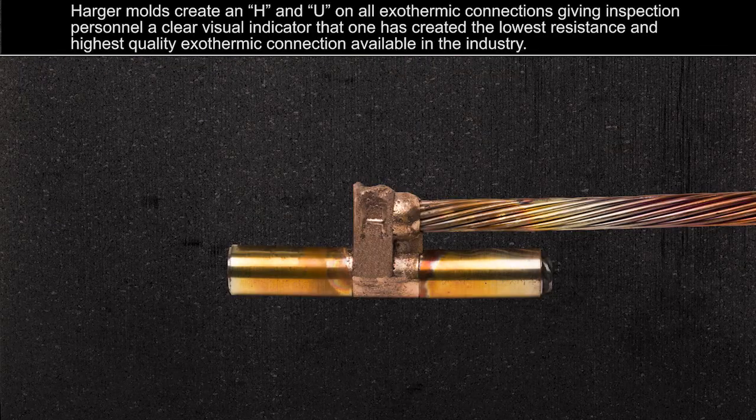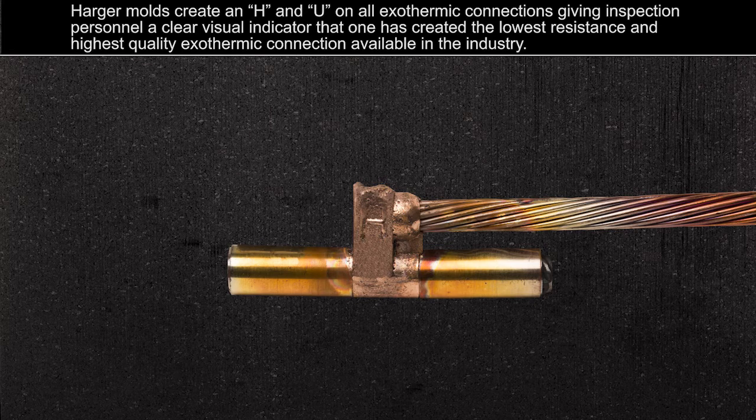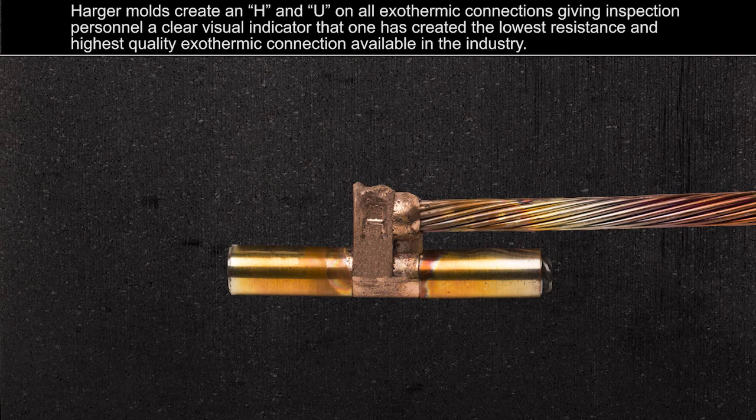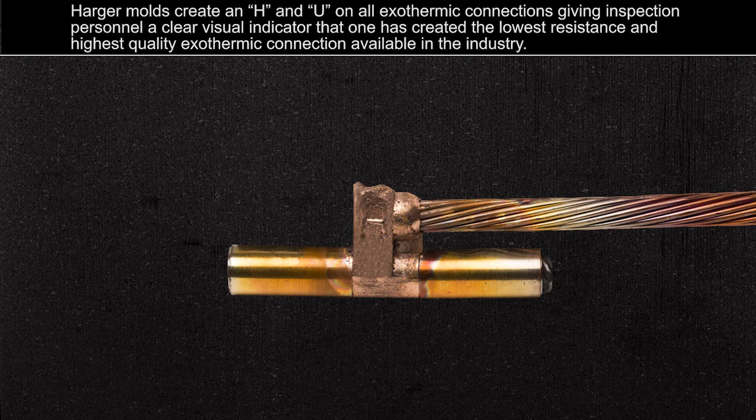Harger molds create an H and U on all exothermic connections, giving inspection personnel a clear visual indicator that one has created the lowest resistance and highest quality exothermic connection available in the industry.